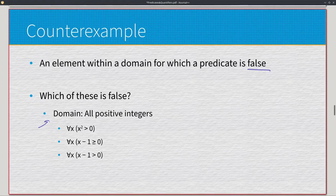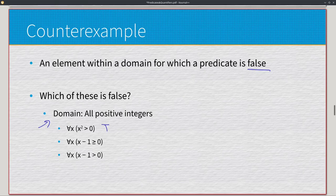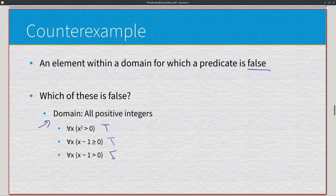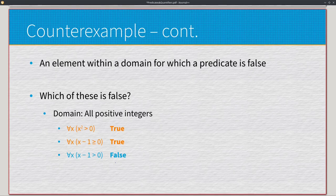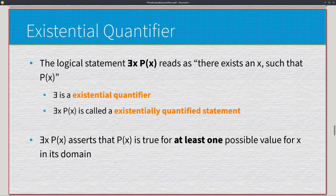We can disprove universal quantifiers with counterexamples — an element in the domain for which the predicate is false. With domain all positive integers: ∀x (x² > 0) — the lowest value is 1, and 1² = 1 > 0, true. ∀x (x−1 ≥ 0) — at x=1, 1−1 = 0 ≥ 0, true. ∀x (x−1 > 0) — at x=1, 1−1 = 0, which is not strictly greater than 0, so this is false. Therefore x=1 is our counterexample, giving us true, true, false.